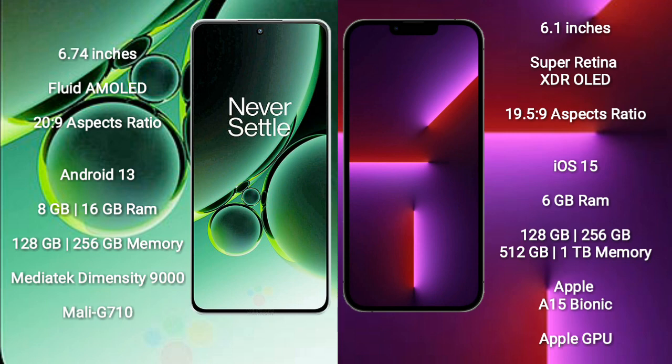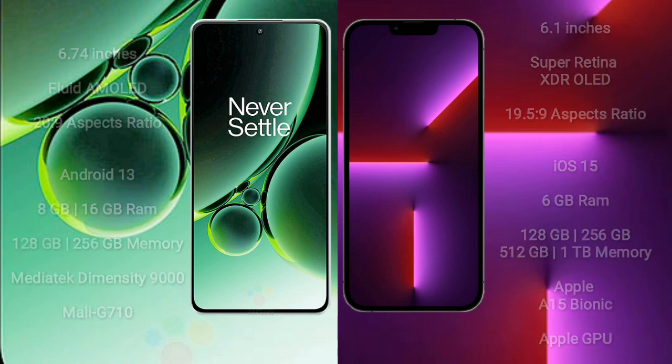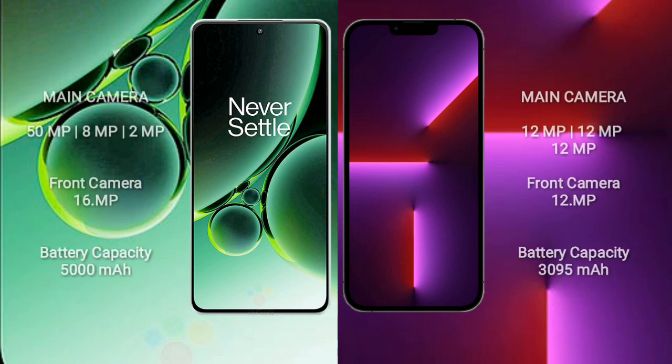iPhone 13 Pro comes with 6GB RAM, and 128GB, 256GB, 512GB, or 1TB internal storage. It is powered by the Apple A15 Bionic processor and Apple GPU.